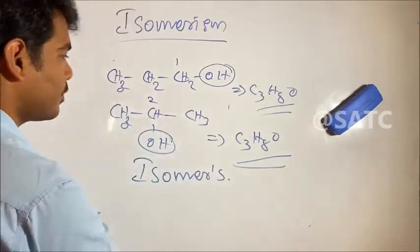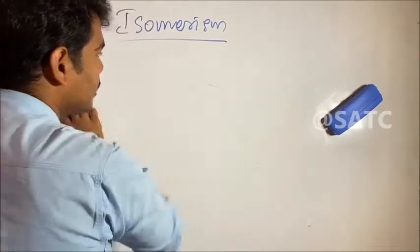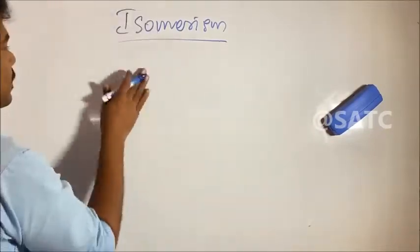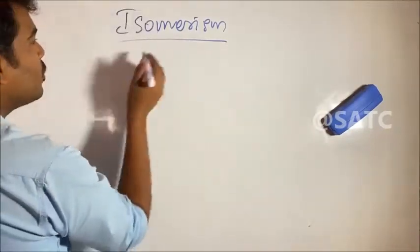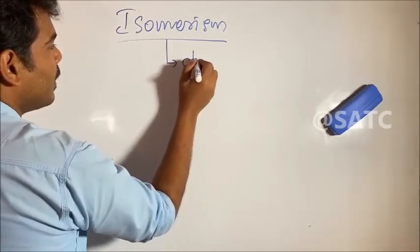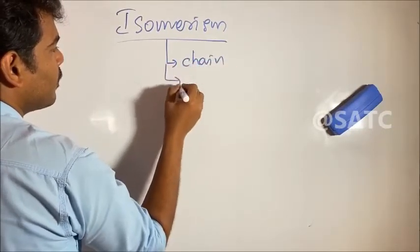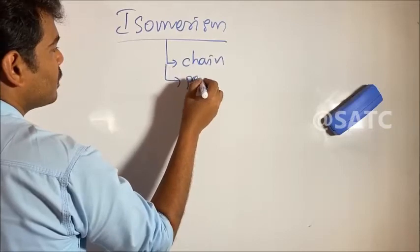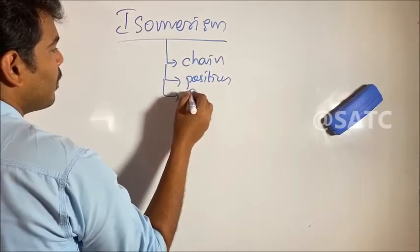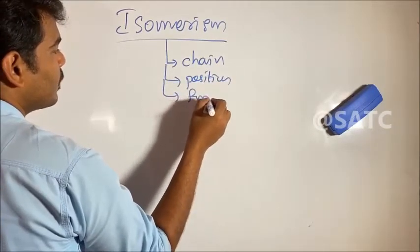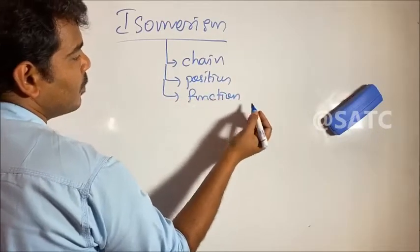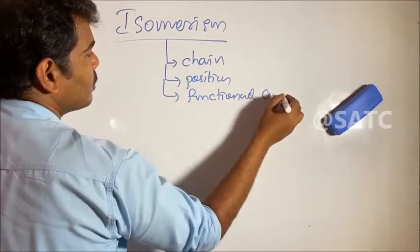There are 3 types of isomerism. The first is chain isomerism, the second is position isomerism, and the third is functional group isomerism.